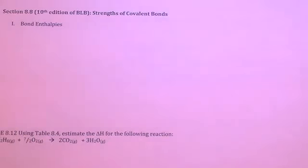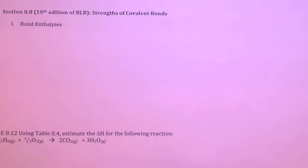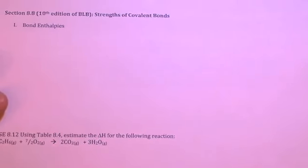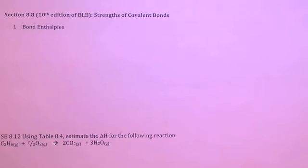Welcome to this last video cast in Chapter 8. Make sure you've got this page in front of you that says Section 8.8, 10th edition of Brown-Lemay Burstyn, Strength of Covalent Bonds. We're going to talk about the strength of covalent bonds today, the length of covalent bonds today, and the enthalpy associated with breaking those bonds. Then we'll do one long integrative exercise that wraps up most of Chapter 8. Have a periodic table handy because it'll help when we draw a few Lewis dot structures throughout this portion of the chapter.